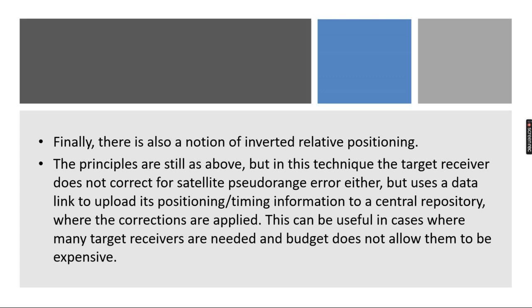The principle technique lies in the satellite pseudo range error, but it also uses data link to upload its position timing information to a central repository where the corrections are applied. As we already know the value of ground control points, this helps us to identify the points which are not known.